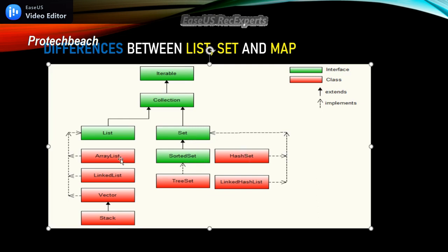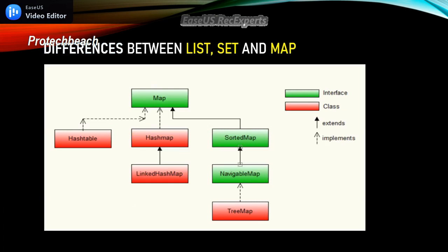Similarly, just as we have classes under List, we have classes under Set as well, like HashSet and LinkedHashSet, which implement the Set interface. Coming back to the Map interface, SortedMap is the interface which extends the Map interface. HashTable and HashMap are the two classes that implement the Map interface. So now we've got some basic similarities between List, Set, and Map.